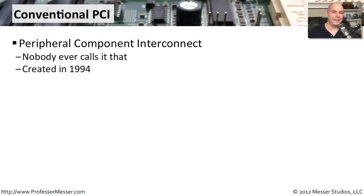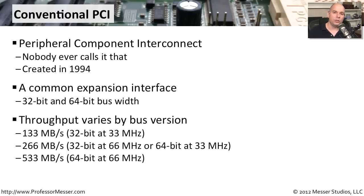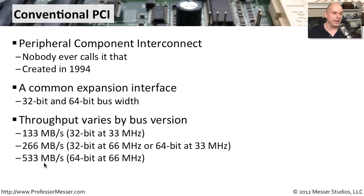PCI stands for Peripheral Component Interconnect — that's why we almost always call it a PCI slot. It was created in 1994, and it's so standardized that even the newest motherboards tend to put one or two PCI slots on there for backward compatibility. You'll find both 32-bit and 64-bit versions of the PCI slot. A 32-bit PCI slot running at 33 MHz gives 133 megabytes per second, while the highest throughput of 533 megabytes per second comes from a 64-bit PCI card running at 66 MHz.